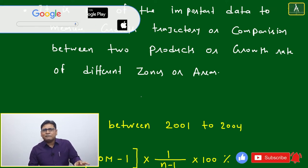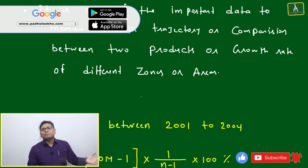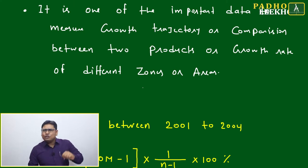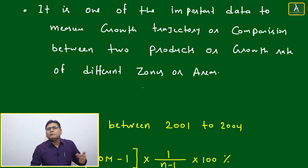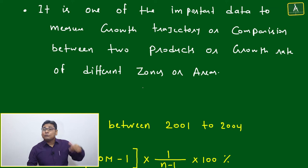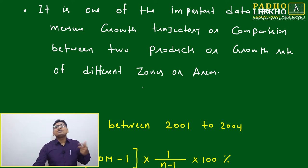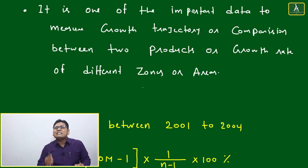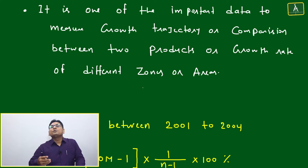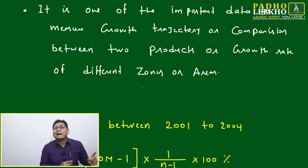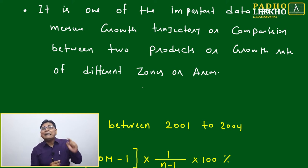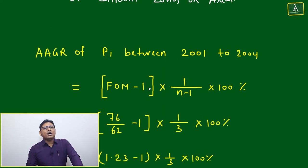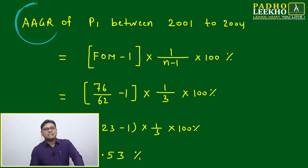Once you become a manager after your MBA, you will always encounter CAGR, sometimes called annual return rate or growth rate. As a C-band officer, you won't compute it manually — you'll use tools to compare CAGR of hundreds of companies to make decisions. This is decision science, and CAGR is a critical factor. Now let's compute the AGR of product P1 between 2001 and 2004.